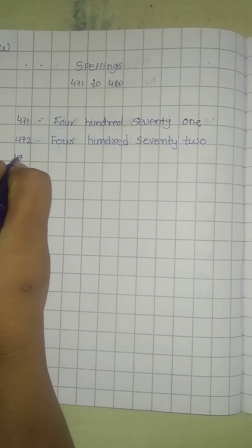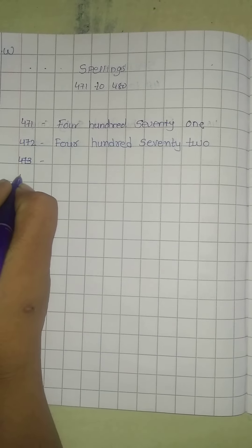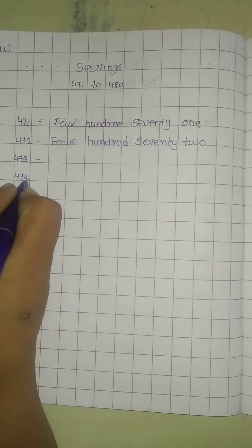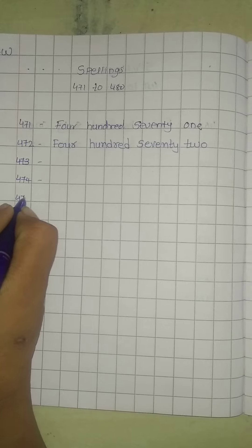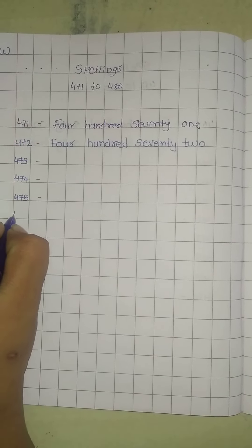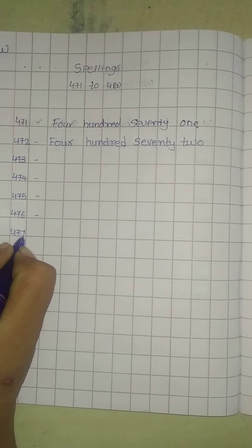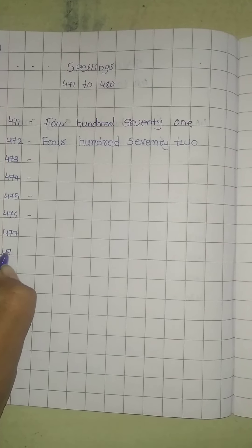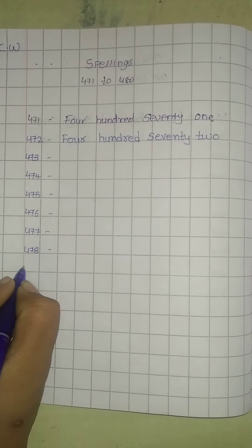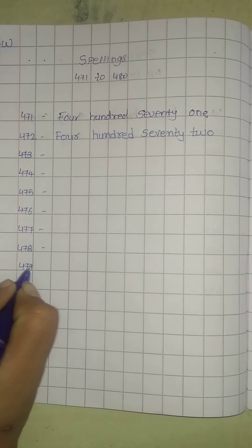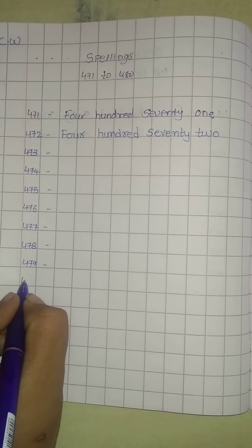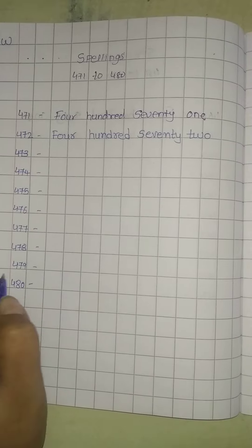you have to write down the spelling of 473, 474, 475, 476, 477, 478, 479 and 480 in your notebook.